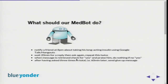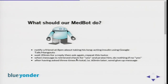Now back to our actual task: building the bot. The idea is to notify a friend at 8 p.m. about taking his long-acting insulin via Google Hangouts. We wait 20 minutes for a reply, then ask again, and again after another interval. During this whole time we check if a message starting with or equal to 'yes' arrives — if so, we send praise. After asking three times in total, we send a give-up message like 'okay, I'm giving up, will ask again tomorrow.'